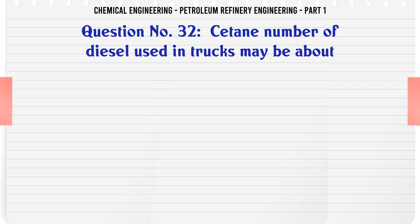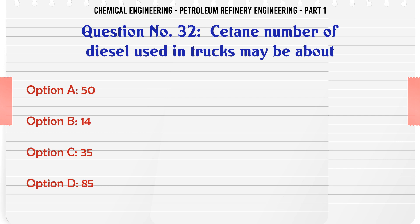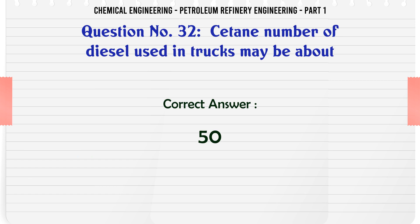Cetane number of diesel used in trucks may be about: A. 50, B. 14, C. 35, D. 85. The correct answer is 50.